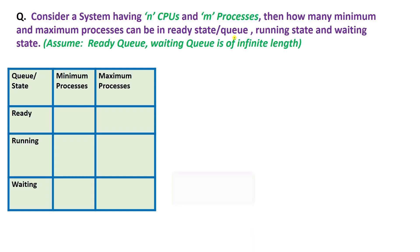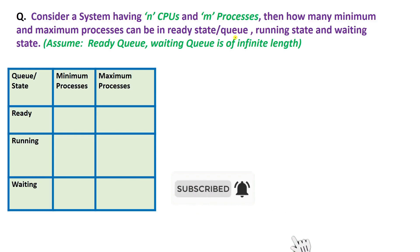Hello everyone. In this video we are going to understand one of the important questions related to process states. We have many process states — the ready state, running state, waiting state, and many other states. The question is: we have a computer system which has n processors, n CPUs, and total m number of processes. We have to tell how many minimum and maximum processes can be present inside the ready queue, running state, and the waiting state at a particular point of time.